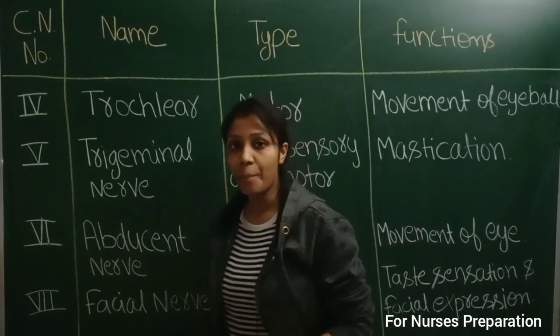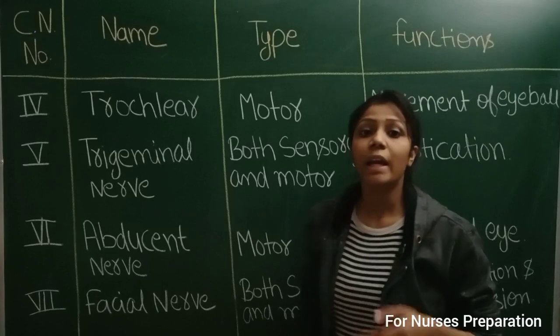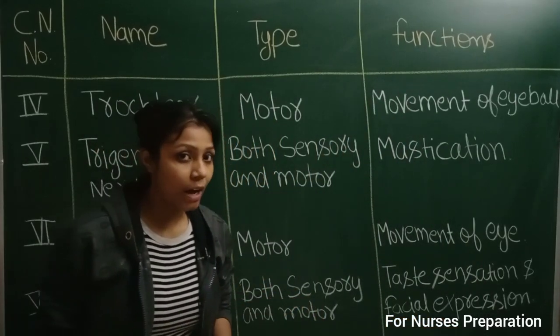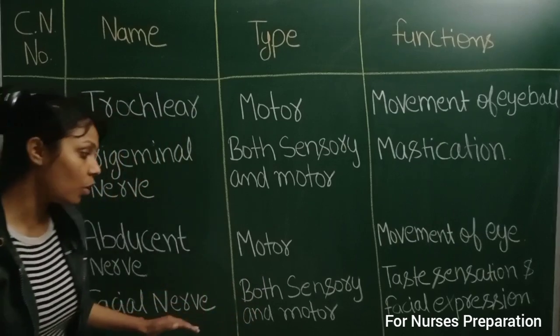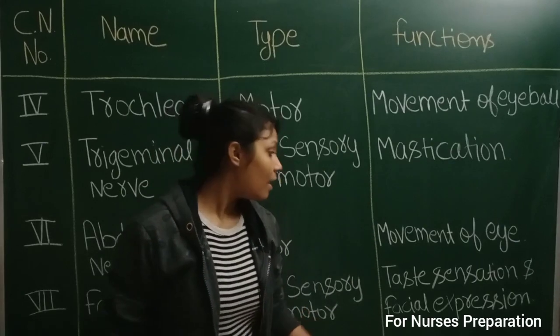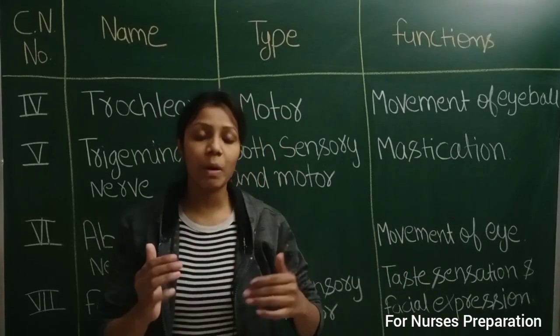Next, cranial number seven is facial nerve. Its type is sensory and motor. Facial nerve is both sensory and motor type and their functions are taste sensation and facial expression.